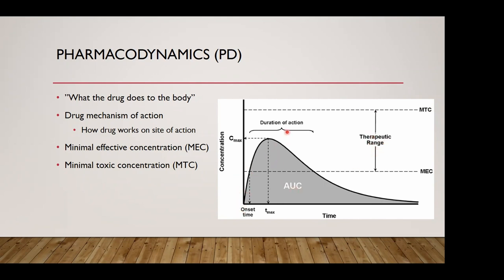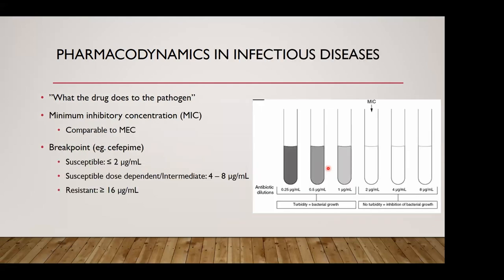We're always trying to keep drug levels within the therapeutic range — like a Goldilocks situation, not too hot and not too cold. We want the drug to work but don't want to see toxicities. Getting more specific to infectious diseases pharmacodynamics, instead of the minimal effective concentration, we focus on the minimal inhibitory concentration — the MIC — which is the minimal amount of drug needed to inhibit bacterial growth.